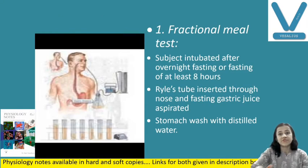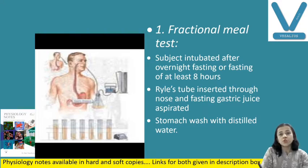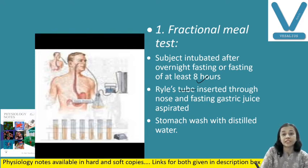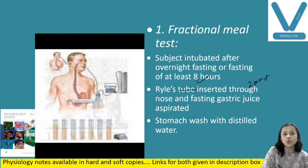Starting with the first one, that is fractional meal test. Here the subject is intubated — a Ryle's tube is introduced. The subject is asked to do overnight fasting, or fasting for at least 8 hours, and after that in the morning the nasogastric tube is introduced. This is a plastic tube made up of soft plastic material with 2 mm diameter, inserted through the nose into the stomach.